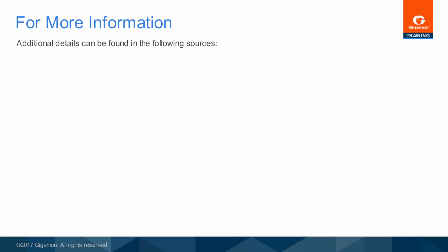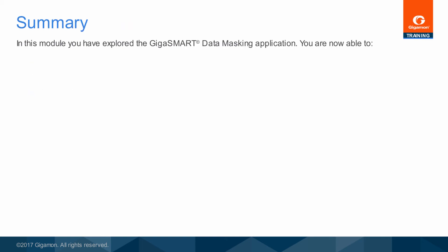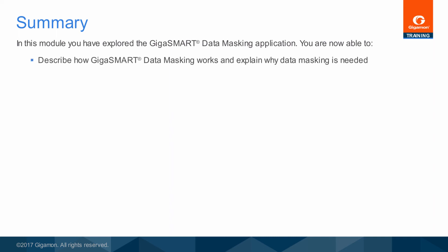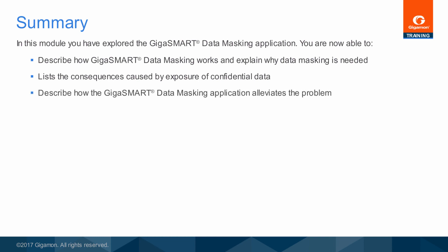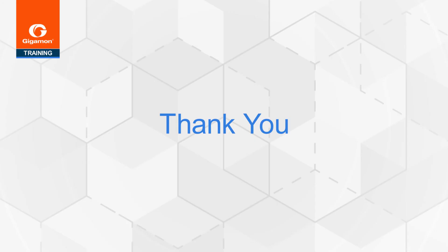Additional details can be found in the CLI and HVUE training modules, user guides, and product data sheets. In this module, you have explored the GigaSmart data masking application. You are now able to describe how GigaSmart data masking works and explain why data masking is needed, list the consequences caused by exposure of confidential data, describe how the GigaSmart data masking application alleviates the problem, and identify the use cases for the GigaSmart data masking application. This concludes the training module for GigaSmart data masking. Thank you.